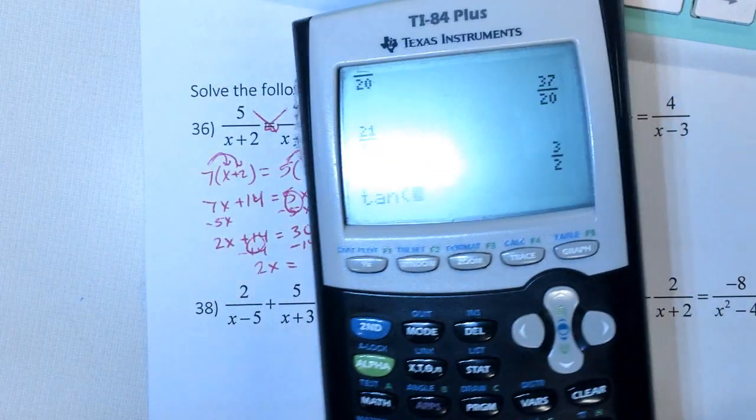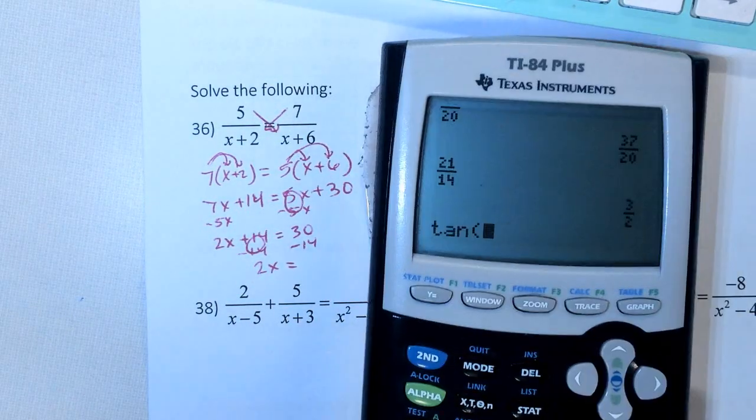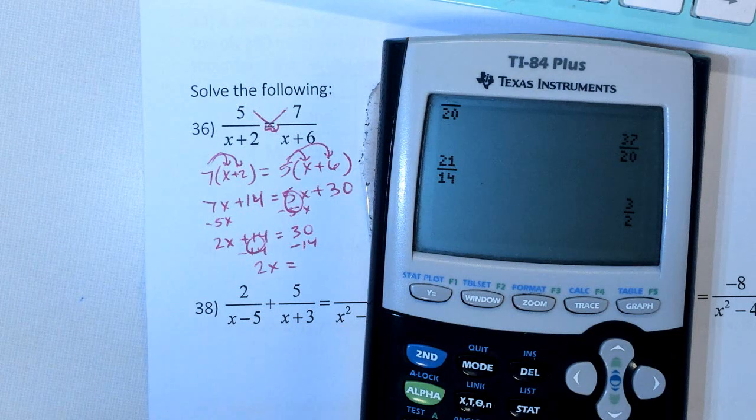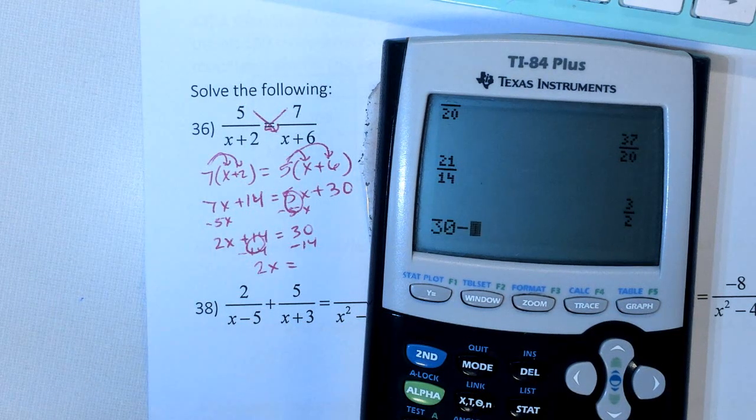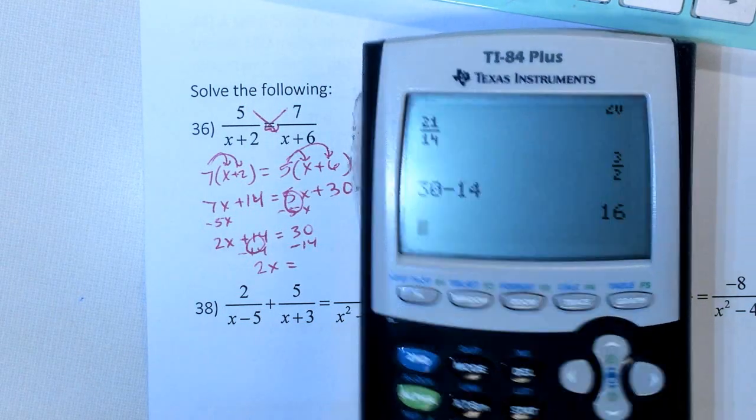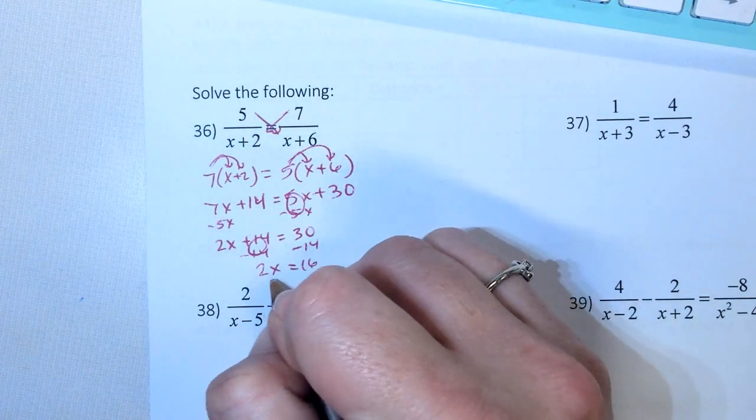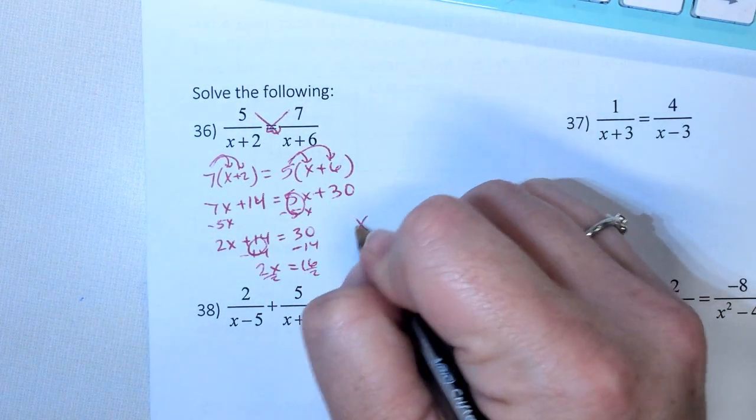Let me check my math. 30 minus 14 is 16. Divide by 2, divide by 2, and I get x equals 8.